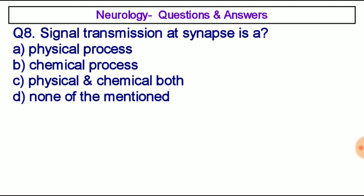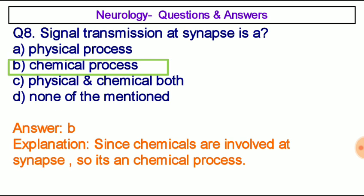Question number eight: Signal transmission at a synapse is — option A: a physical process, option B: a chemical process, option C: both physical and chemical, option D: none of the mentioned. The correct answer is option B, a chemical process. Signal transmission at the synapse is a chemical process because chemicals — neurotransmitters — are involved at the synapse.